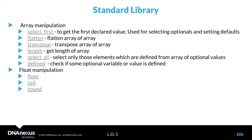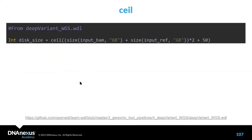There are also functions for array manipulation. We used select_first a lot in the first part when defining default values — for example, a list of values with either a variable 'age' or 42, where 42 is used if 'age' is not provided because it's optional. There are also flatten, transpose, length, select_all, and defined. For floor manipulation, we'll use the ceil function for rounding up in dynamic resource allocation.